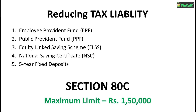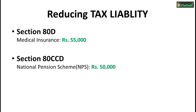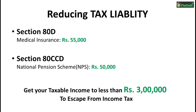So even after using the maximum limit of Rs.150,000 under section 80C, if your gross taxable income is still not less than Rs.3 lakhs, you can use the following schemes. You can claim a maximum of Rs.55,000 under section 80D, but only when you have medical insurance for yourself and your parents. Also, you can claim a maximum of Rs.50,000 under section 80CCD if you invest in NPS, i.e. National Pension Scheme. So try to get your gross taxable income to less than or equal to Rs.3 lakhs.